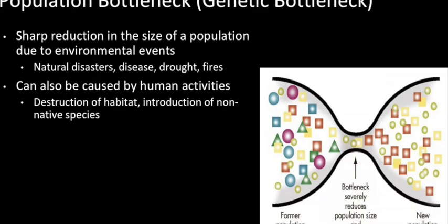Another aspect of natural selection is population bottleneck, also referred to as genetic bottleneck — a sharp reduction in the size of a population due to some event. These events can be environmental, such as fire, disease, drought, famine, or natural disasters, or caused by humans, such as habitat destruction or introduction of non-native species. Within a population there is diverse variation; individuals are the same species but slightly different, just as humans all look slightly different from each other.